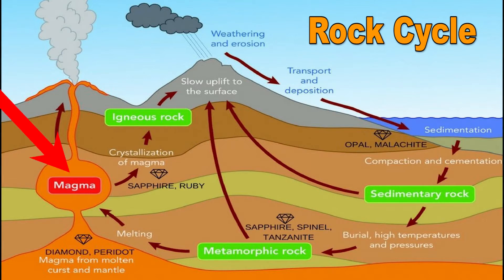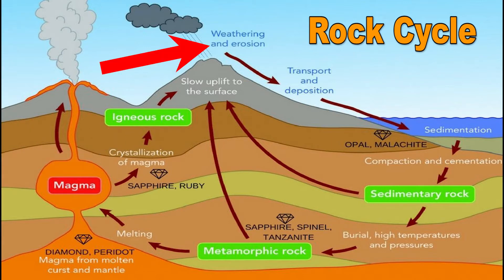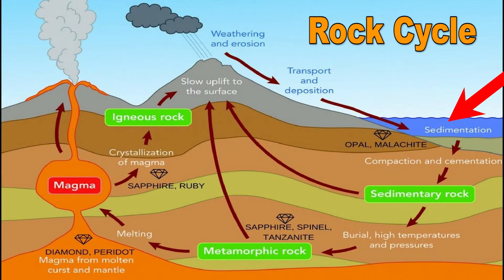First, melted rock or magma is sent to the earth's surface by a volcano. It cools and forms igneous rocks. Next, weather, rivers, and other events will slowly break up this rock into small pieces of sediment. As sediment builds up and hardens over years, sedimentary rocks are formed.